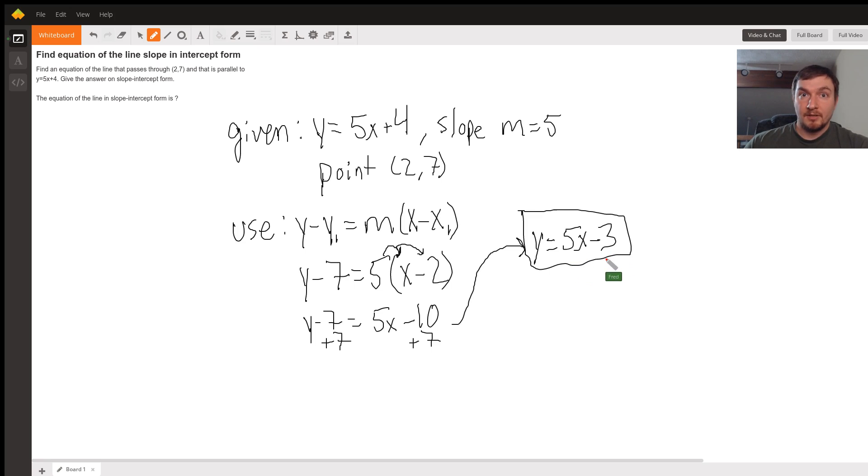That's in slope-intercept form. And to make sure that this is not the same line as we started with, it has the same slope. When they run parallel, that means they're never going to touch each other. So they have to have the same slope, but they do have different y-intercepts. That means they are different lines. I hope this helps you out, bud. Have a good day.